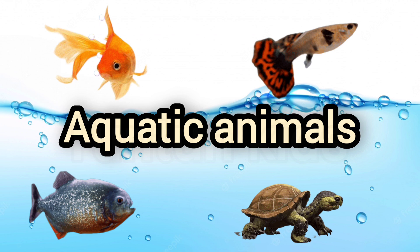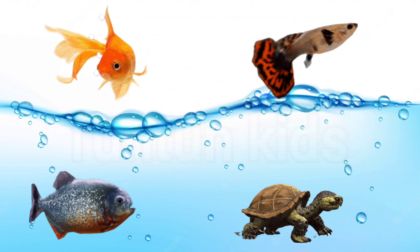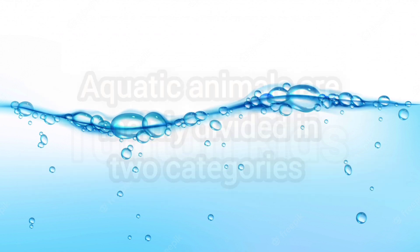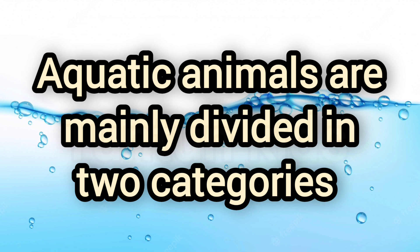Aquatic Animal. Aquatic animals are those animals that live and grow in or on water. Aquatic animals are mainly divided into two categories.